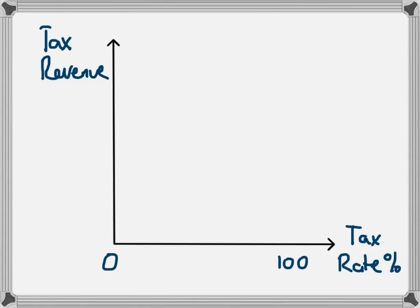At a tax rate of zero, the government won't collect any revenue. So if the tax rate is zero, then the tax revenue will also be zero. So we're going to start here.